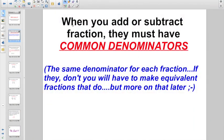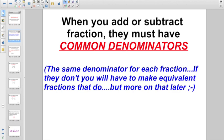So, a quick little review or new piece of information: when you add or subtract a fraction, they must have what is called common denominators, the same denominators. You can add or subtract two-fifths, or you can add or subtract anything that says sevenths, the same denominator for each fraction. If they don't have the same denominator, you'll have to make equivalent fractions that do, but more on that later.